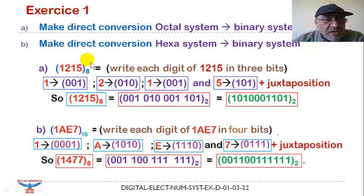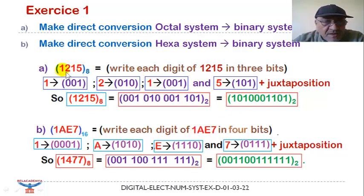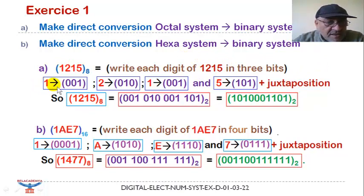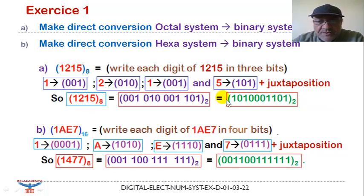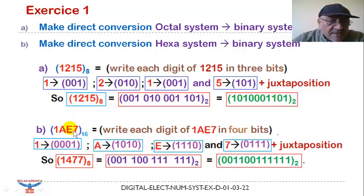Now we have an exercise: make a direct conversion from octal to binary system. The octal number is 1215. We write each digit in three bits: one is 001, two is 010, one is 001, and five is 101. We then make a juxtaposition of these transformations to obtain the final result in binary system.